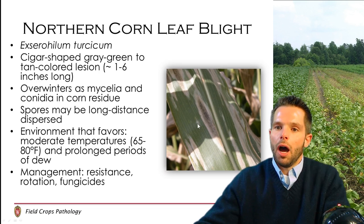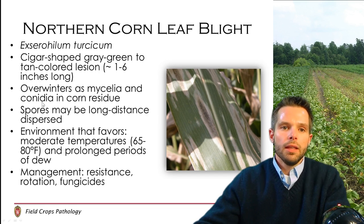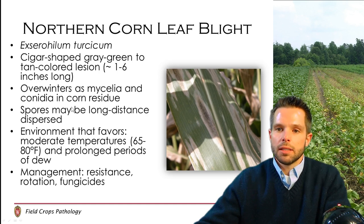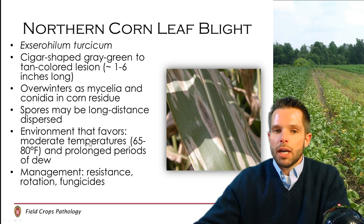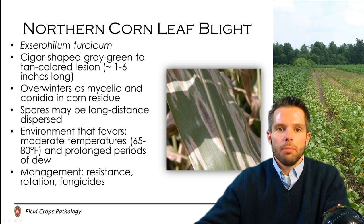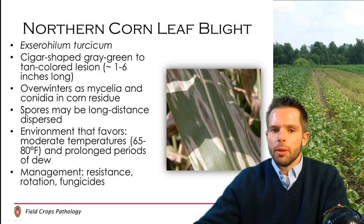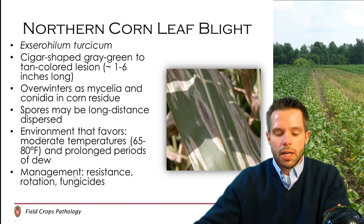That grayish growth is actually the spores or the body of the fungus producing spores that have erupted through the surface of the leaf. These spores are again splash dispersed typically from corn residue up onto the leaves of the plant, and as the season progresses it will slowly move up the plant. In years where we have cool temperatures — 65 to 80 degrees — and prolonged periods of dew or rain, that really makes conditions conducive for northern corn leaf blight. Management includes the use of resistance, crop rotation the longer the better, and fungicides.